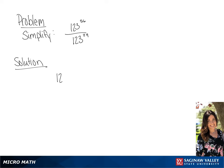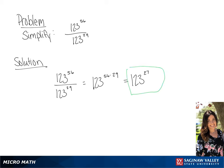We have 123 to the power of 56 over 123 to the power of 29. Since the bases are the same, we can subtract the exponents. So we have 123 to the power of 56 minus 29, and our final answer is going to be 123 to the power of 27.